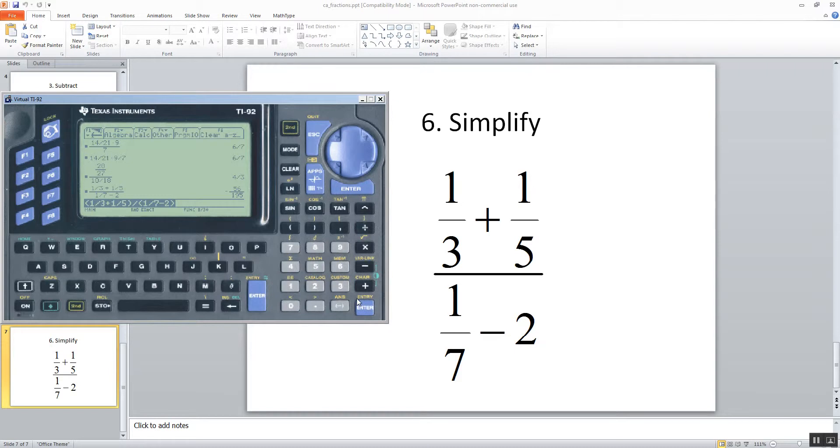And it gives us negative 56 over 195. And that's how you do fractions on a TI-92 calculator.